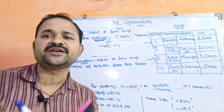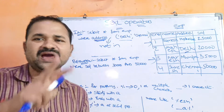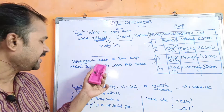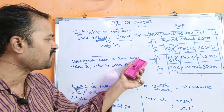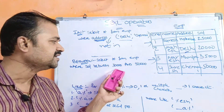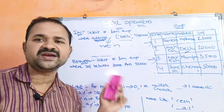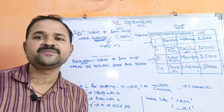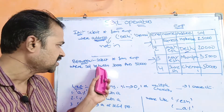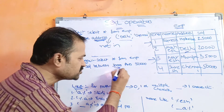Now let us see about BETWEEN. BETWEEN is used to display the records between two values — some minimum value and maximum value. For example: SELECT * FROM EMP WHERE salary BETWEEN 30,000 AND 50,000. We mainly use BETWEEN with numerics — it may be integers or floating point numbers.